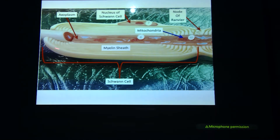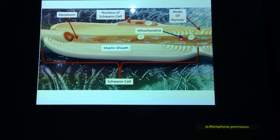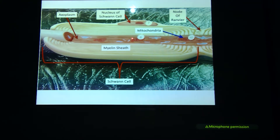Here is my Schwann cell with its myelin sheath, and the nucleus of the Schwann cell up here. You also have that node of Ranvier — you can see that little squiggly line right there. And here are my mitochondria, that same red color from the cell body. In the axon they're cut in half, so you can see the little squiggly on the inside.